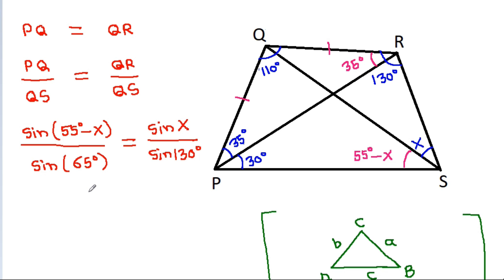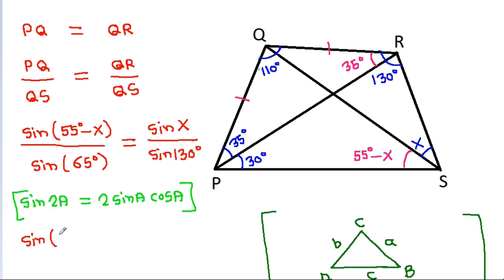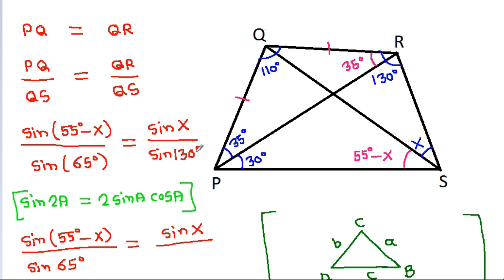And sin 2A equals 2 sin A cos A, so sin 130 degrees equals sin(2 times 65 degrees) equals 2 sin 65 degrees cos 65 degrees. Then sin(55 degrees minus X) divided by sin 65 degrees equals sin X divided by sin 130 degrees, and sin 65 degrees cancels.